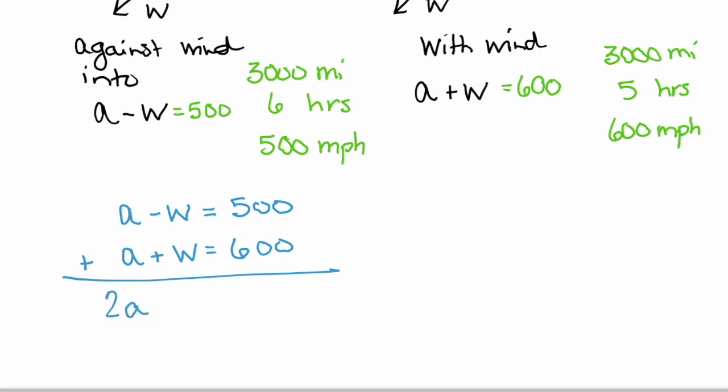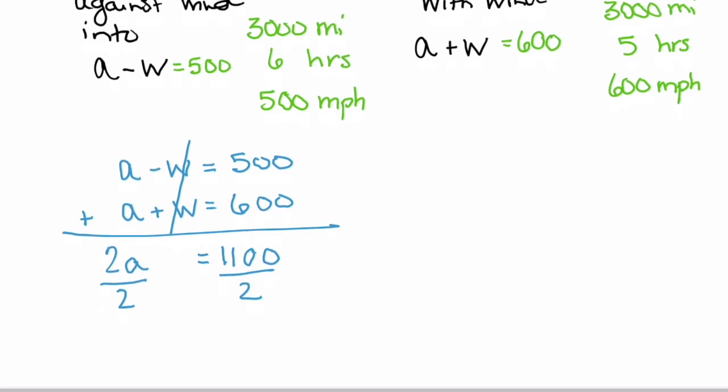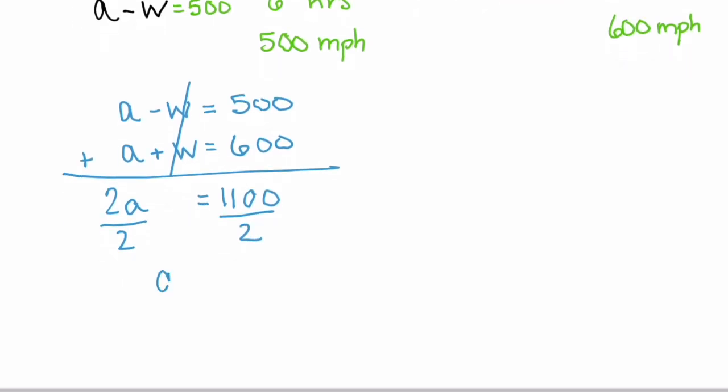So we have 2a, the w cancels out, equals 1100. Divide by 2, and we get that a equals 550.